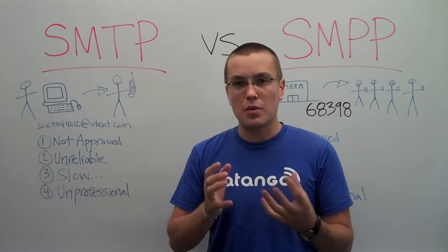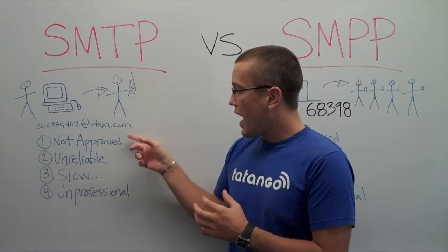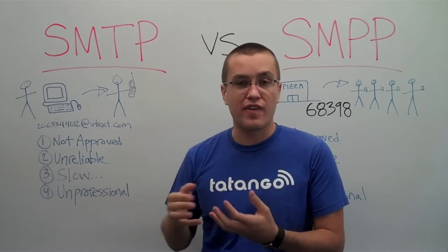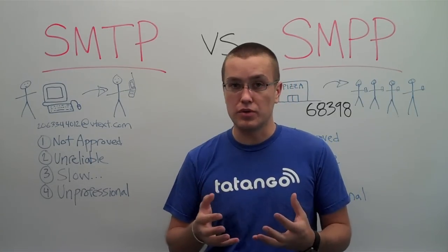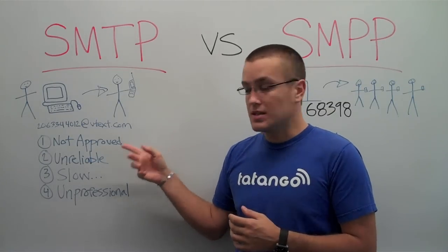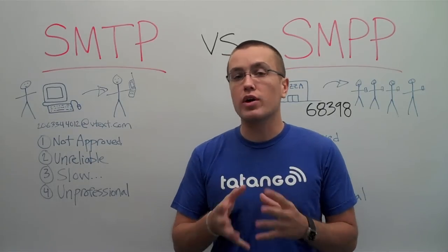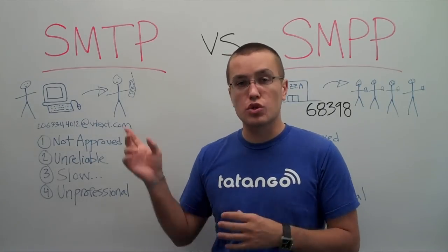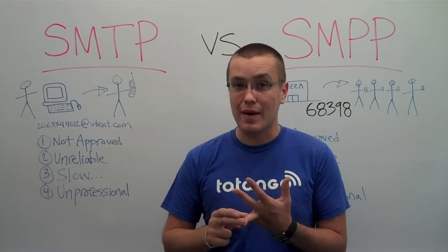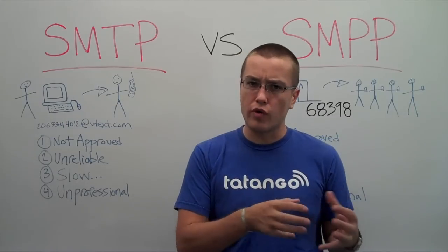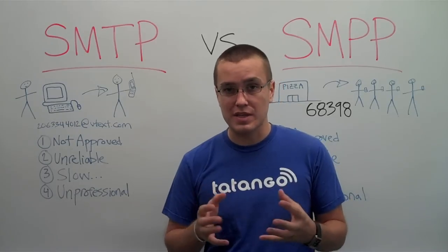The problem is that SMTP was meant for one-to-one, peer-to-peer communication. But a lot of SMS providers found out about this and started using it for purposes it wasn't supposed to be used for. There are four problems. First, it's not approved by any cell phone carrier for sending marketing messages through the SMTP gateway. There's no approval process, which is why you see a lot of spam coming through SMTP — nobody has to look over it or give it a stamp of approval.